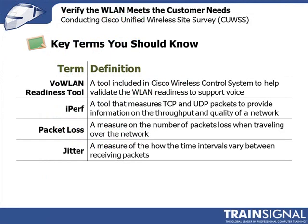Some of the key terms you should be familiar with: the first is the Voice over Wireless LAN readiness tool. This is a tool included in the Cisco Wireless Control System that will help you make sure that the wireless LAN is ready to support voice. When you use this tool, make sure you enter the right client parameters, the access point transmit power, and of course the band that your IP phones are operating in.